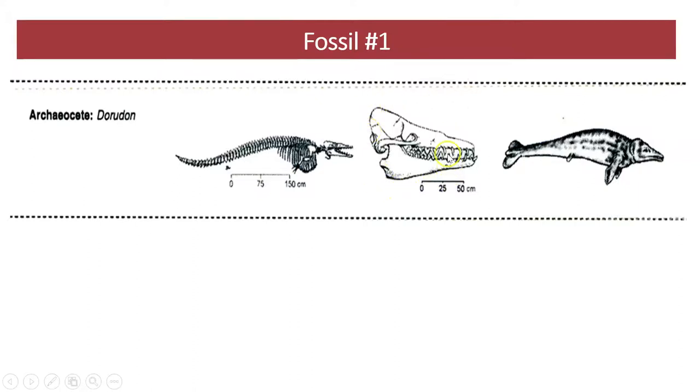Here we have a close-up of Duradon's skull. We can look at the shape of the skull, the size of the skull. I see the upper jaw right here, the lower jaw right here, the teeth. Does this bone structure appear more suited to land or water? Why do you think so?